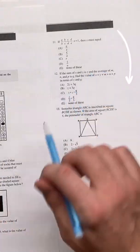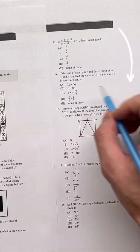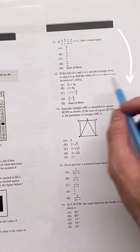I really like this one, number 12. If the sum of x and y is z, and the average of m, n, and p is q, find the value of x plus y plus m plus n plus p in terms of z and q.